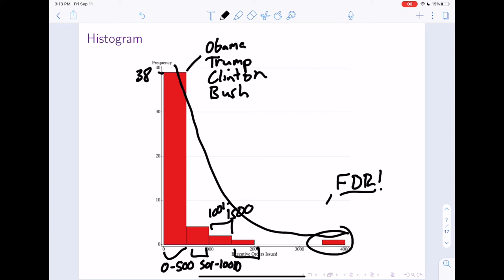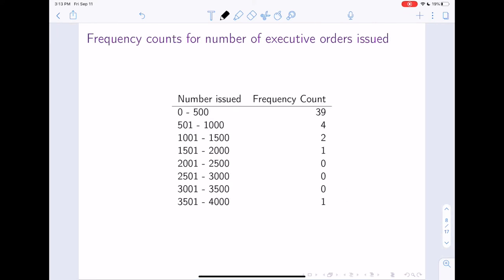Now, you can represent a histogram as a frequency table. So this is basically like a frequency table we saw in Section 2.1. And so these would be your categories, 0 to 500 executive orders issued, 501 to 1,000, 1,001 to 1,500, and so on and so on and so on. And then we see the frequency count, the number of presidents there are who issued that many executive orders.